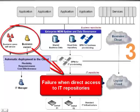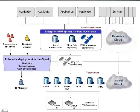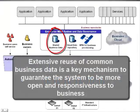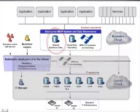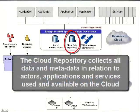A higher level of abstraction must be enforced — that means a business cloud. This business cloud is based on the cloud business modeling. The cloud approach requires governing shared business data between all applications and services in order to remove the negative silo effect on data quality. The extensive reuse of common business data is a key mechanism to guarantee the system to be more open and responsive to business. The cloud approach also requires a dedicated cloud data repository. This repository collects all data and metadata in relation to actors, applications, and services used and available on the cloud.